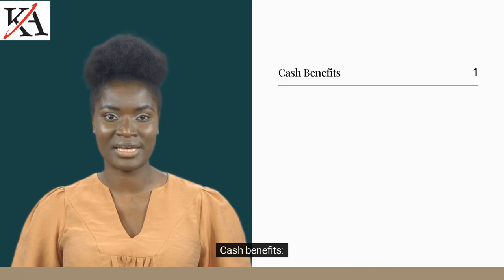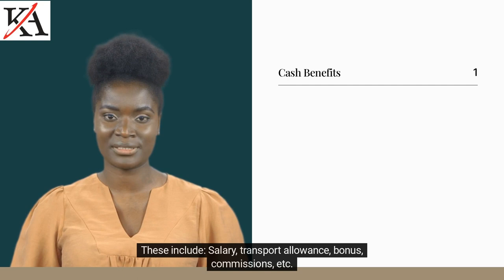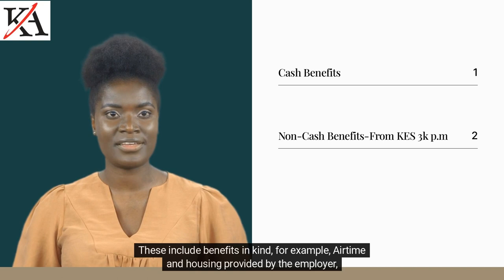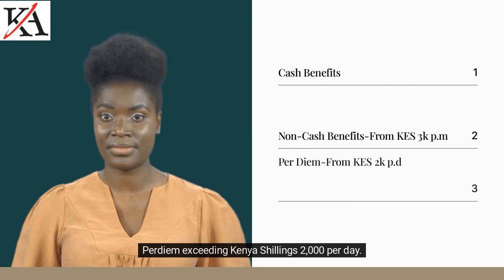Income subject to pay-as-you-earn includes cash benefits such as salary, transport allowance, bonus, commissions, etc. Non-cash benefits exceeding Kenya shillings 3,000 per month or Kenya shillings 36,000 per year are also taxable. These include benefits in kind, for example airtime and housing provided by the employer. Per diem exceeding Kenya shillings 2,000 per day is also subject to PAYE.